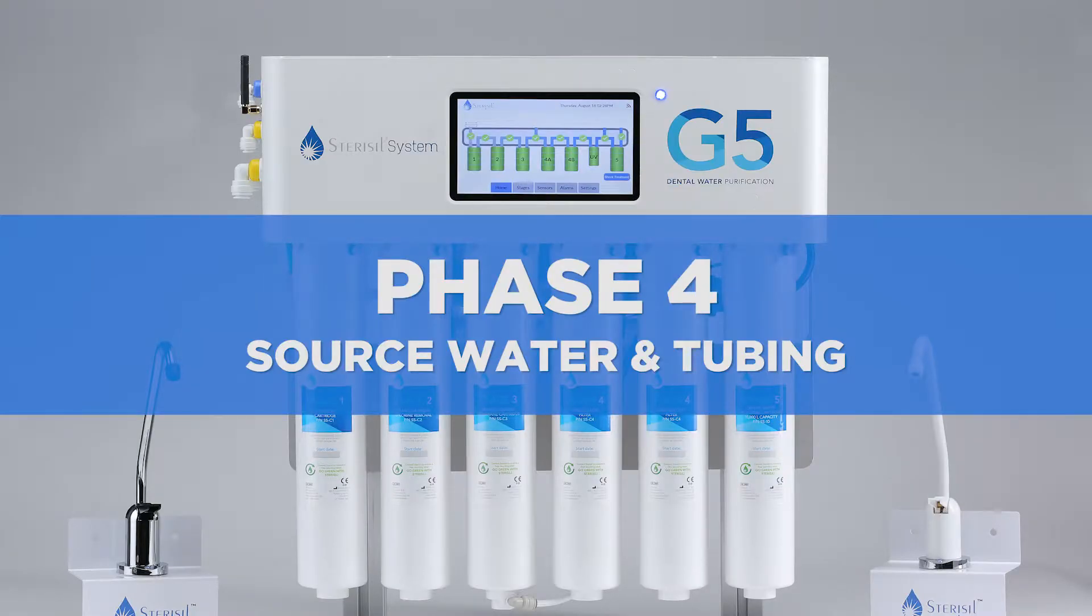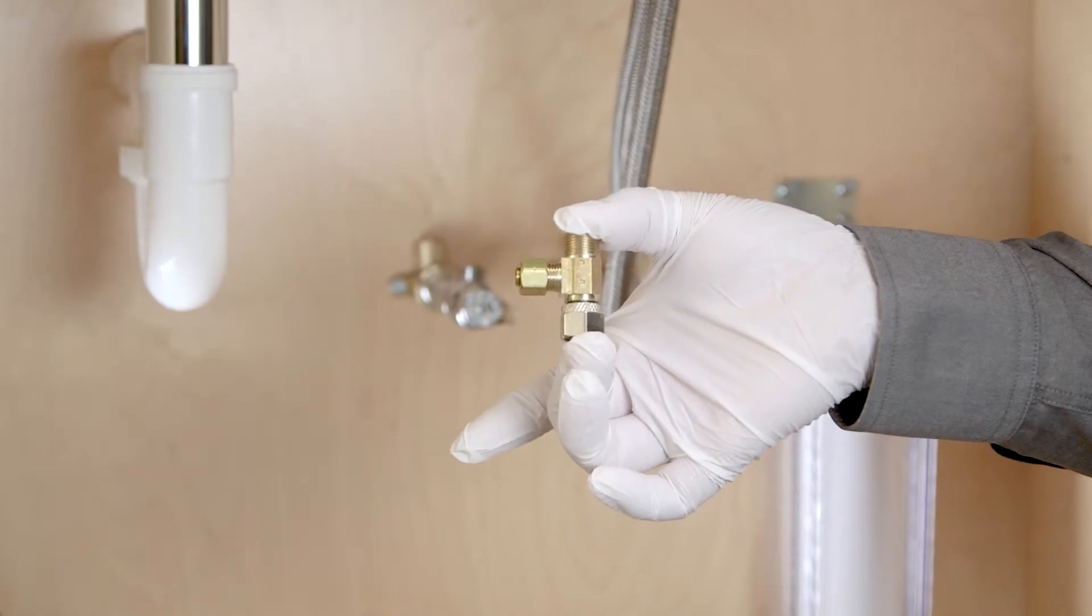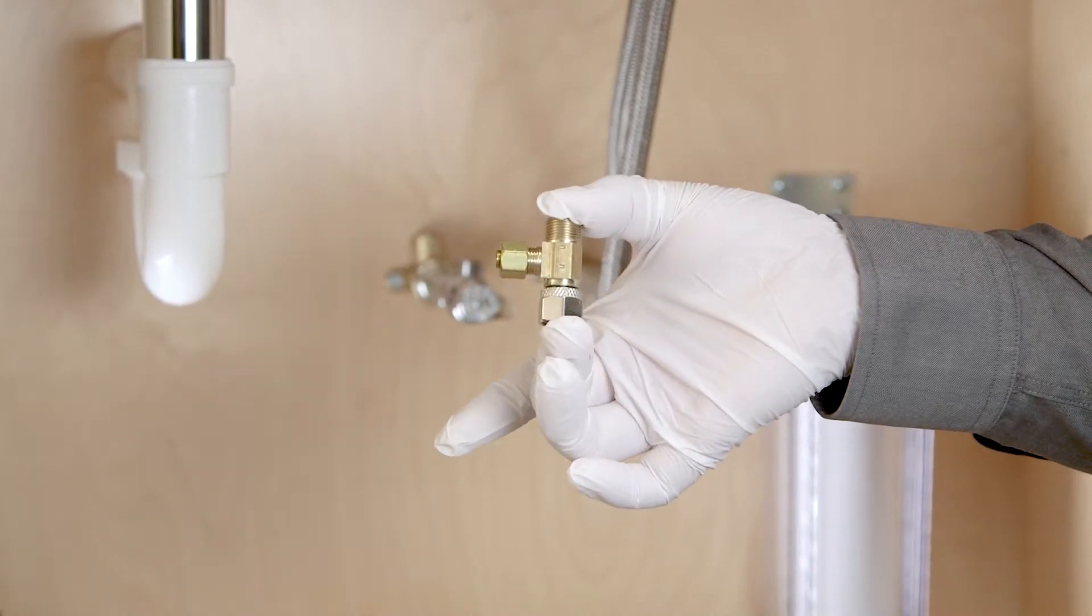Phase 4, source water and tubing. In phase 4, you'll be linking the peripheral components with tubing and preparing the municipal source line to supply the G5 with water.